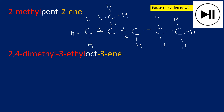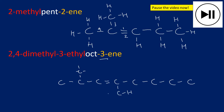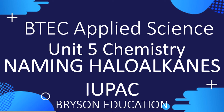For 2,4-dimethyl-3-ethyloct-3-ene: 'oct' means eight carbons — 1, 2, 3, 4, 5, 6, 7, 8. Place a double bond between carbons three and four. '2,4-dimethyl' means a methyl group on carbon two and a methyl group on carbon four. '3-ethyl' means an ethyl group (two carbons) on carbon three. It doesn't matter whether you draw side groups above or below. Apply the same rules: each carbon must have four bonds and each hydrogen one bond. That's it for this video — the next video will cover naming haloalkanes using IUPAC rules.